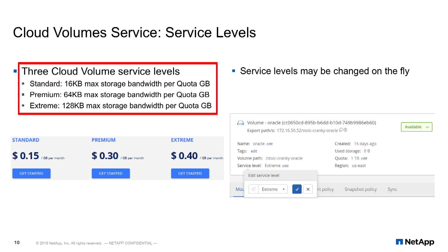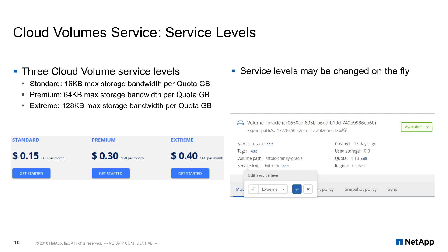There are three cloud volume service levels: Standard, Premium, and Extreme. The definition of a service level comes down to the amount of kilobytes of max storage bandwidth per quota gigabyte. At Standard level you get 16 kilobytes max storage bandwidth per quota gigabyte. So for a 1 gigabyte quota, you would have 16 kilobytes — that's four 4K operations, two 8K operations, or one 16K operation.